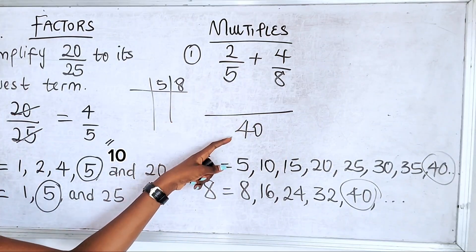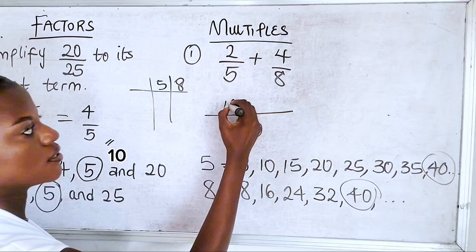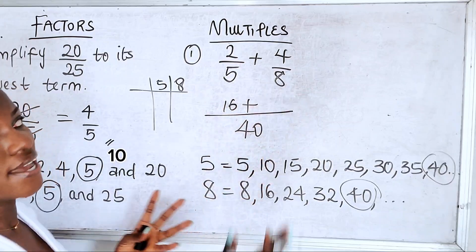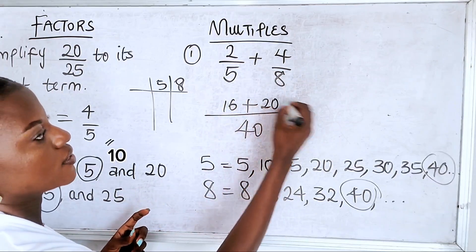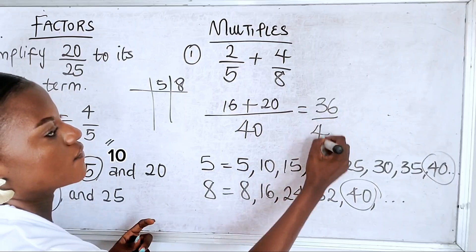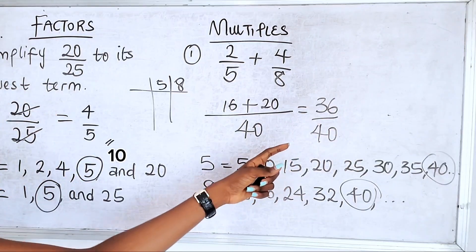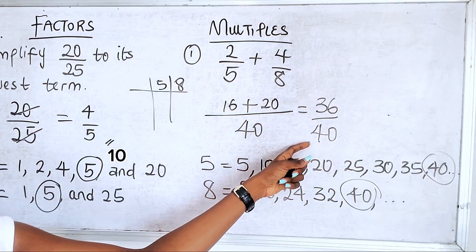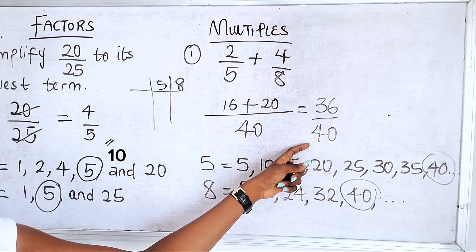So 5 in 40 is 8. 8 times 2 is 16. 8 in 40 is 5. 5 times 4 is 20. And then you have 36 over 40. And for people who know, you know that this can also be reduced to its lowest term.